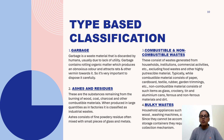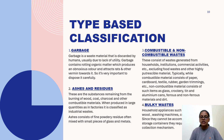Next is combustible and non-combustible waste. These consist of waste generated from houses, institutional, and commercial activities, excluding food waste and other highly putrescible material. Typically, combustible material consists of paper, cardboard, textile, rubber, garden treatments, etc., while non-combustible waste consists of items such as glass, crockery, tin, and aluminum cans.